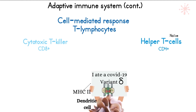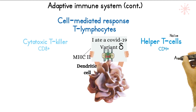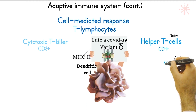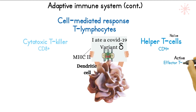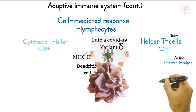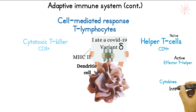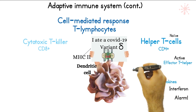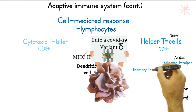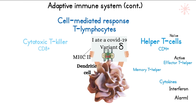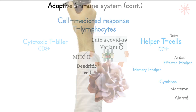A naive T cell is one that has not yet been introduced to a pathogen. Once a dendritic cell presents MHC2 to the T cell, the helper T becomes activated — also called the effector T helper. This cell does not kill, but it produces cytokines, which trigger an alarm throughout the immune system to promote other cells to fight the pathogen harder. Part of the activated T cells will turn into memory T helper cells, storing pathogen information for a faster reaction on future exposure.